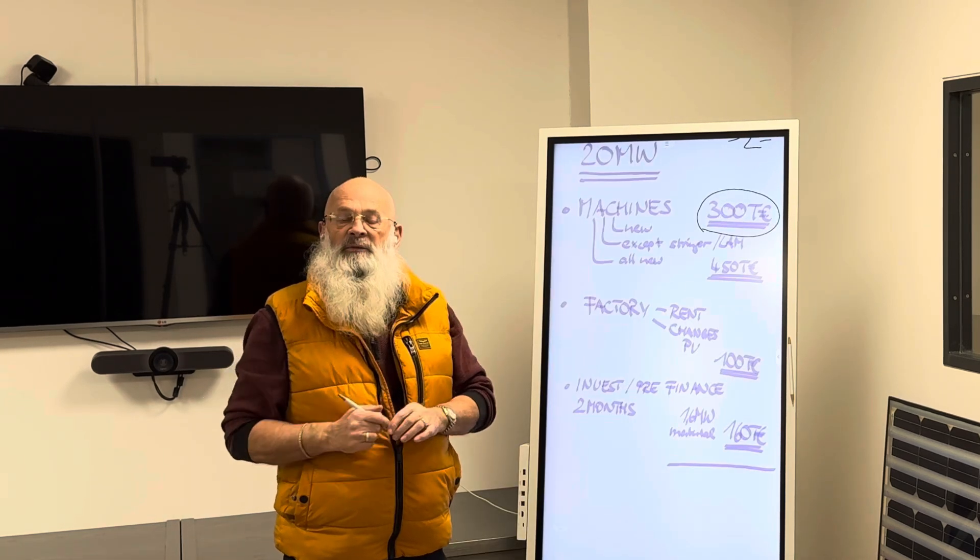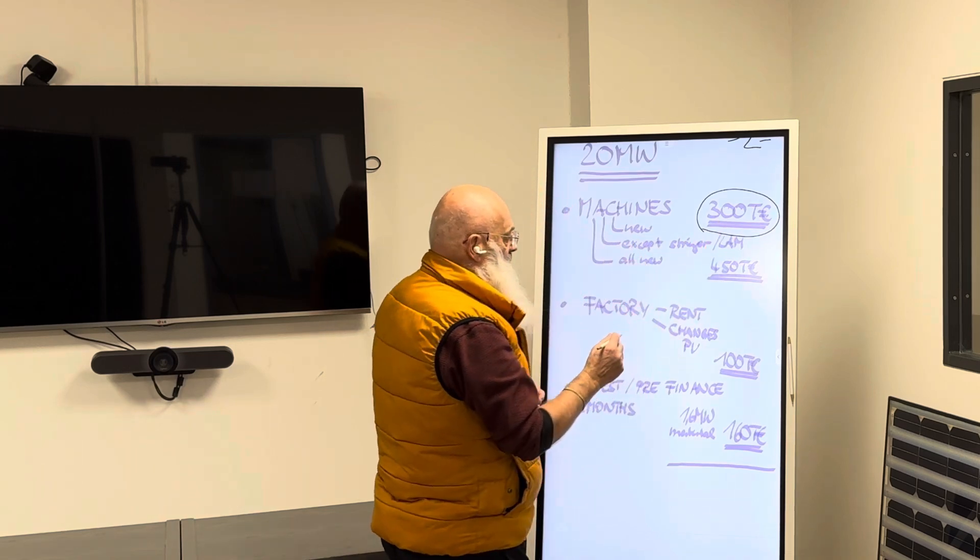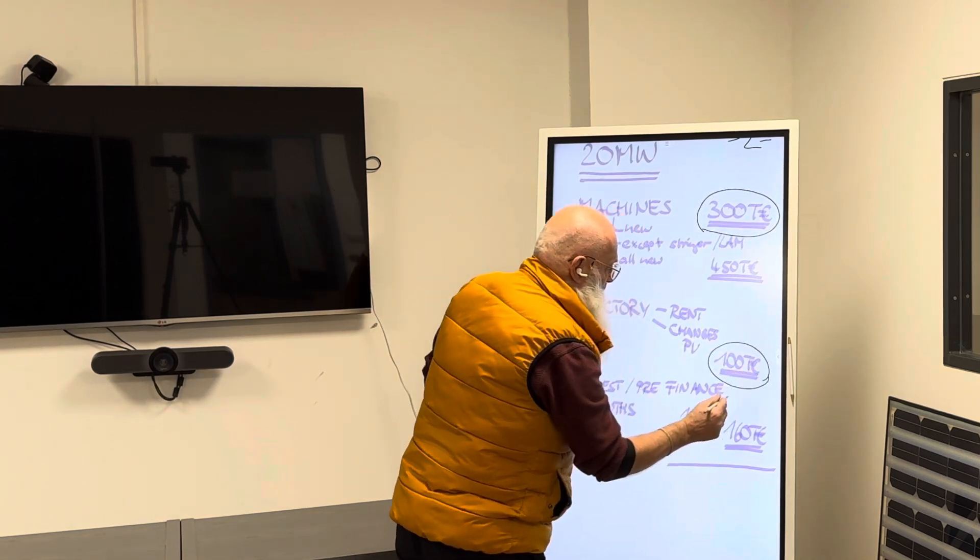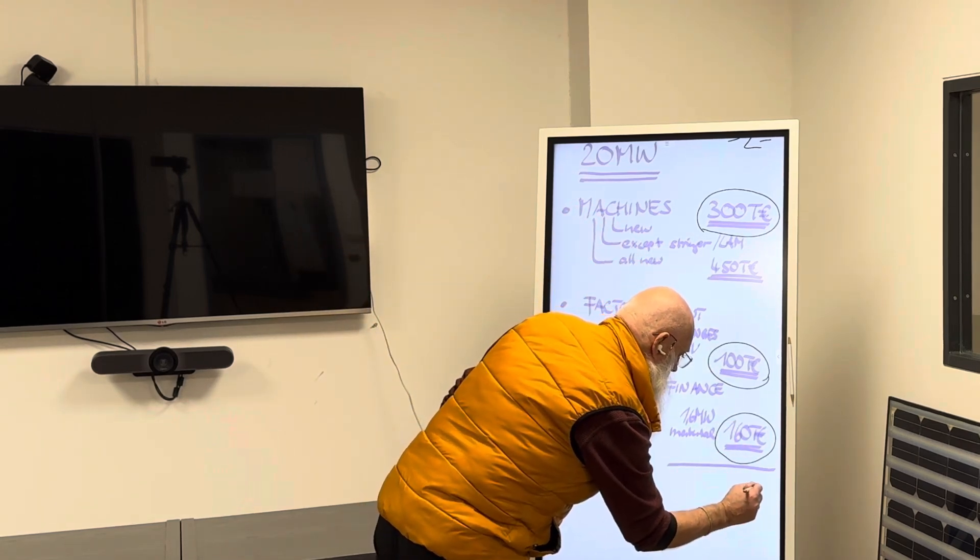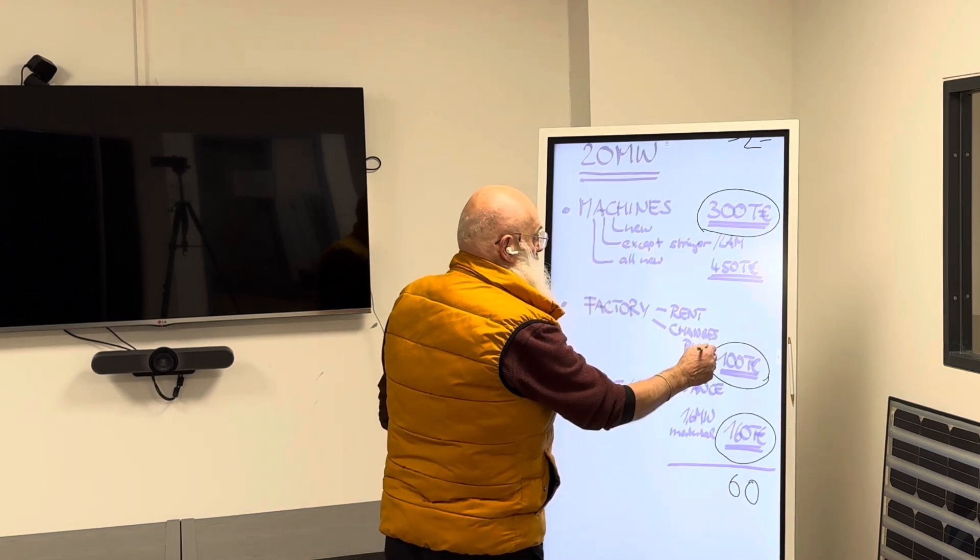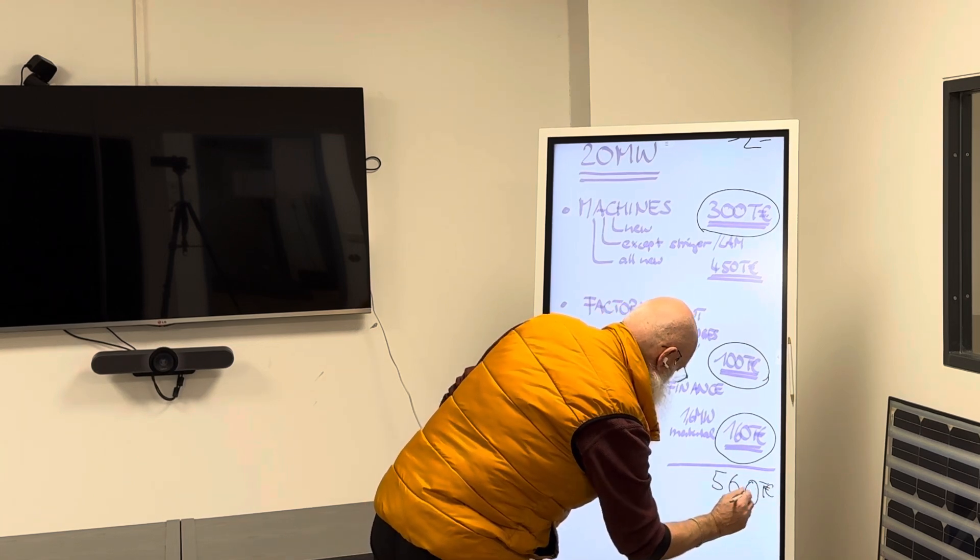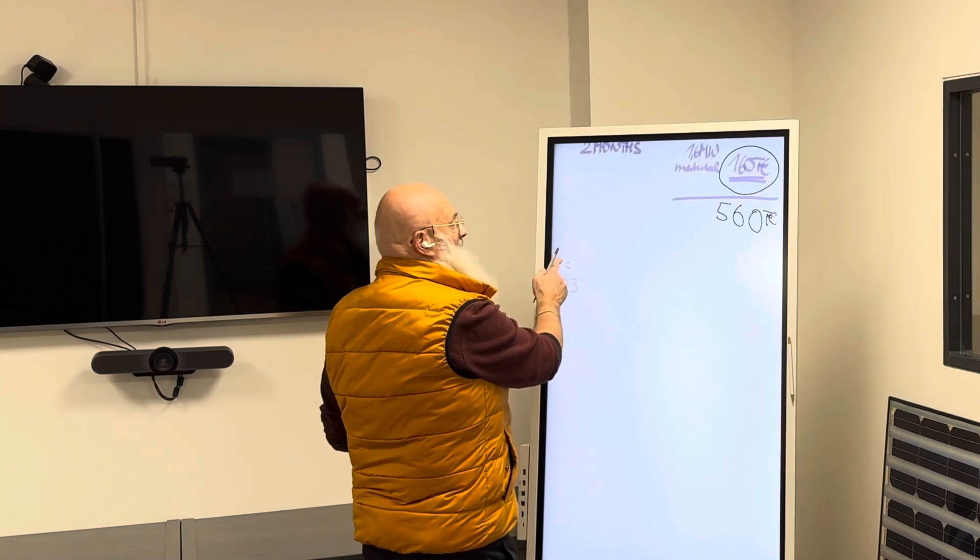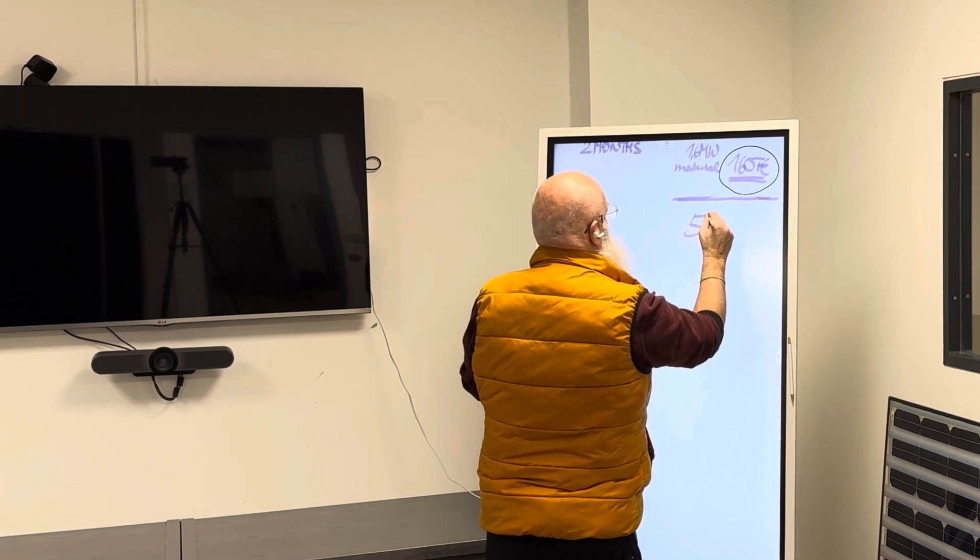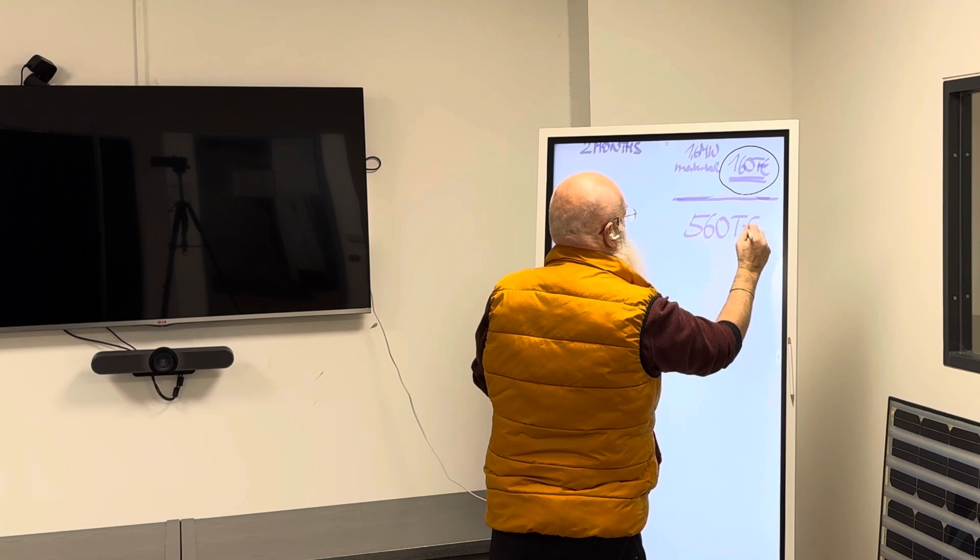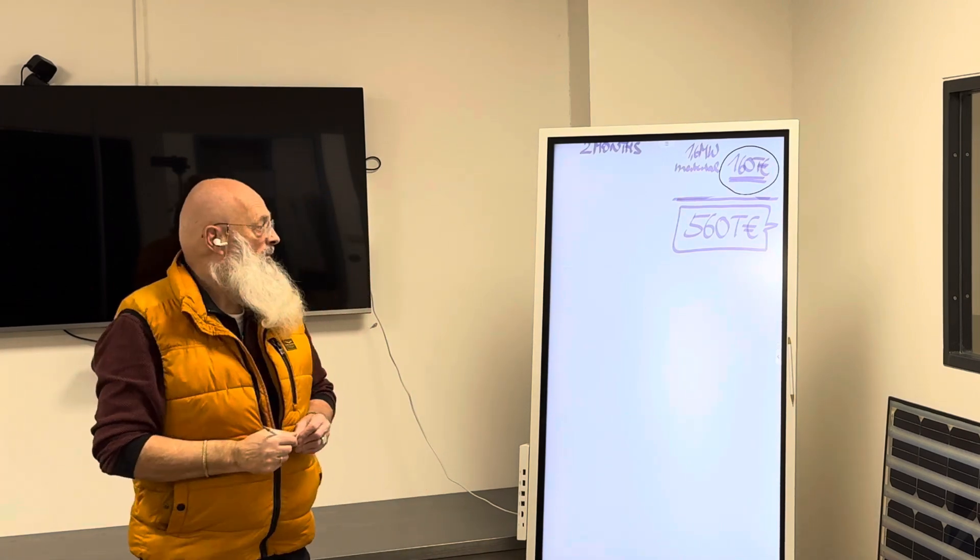Now let's calculate for the refurbished, partly refurbished solution which is 300,000 euro for machines, 100,000 euro for factory, and 160,000 euro for material. This means the total is 560,000 euro for the complete factory and complete investment to make 20 megawatt every year.